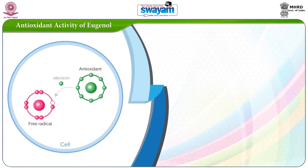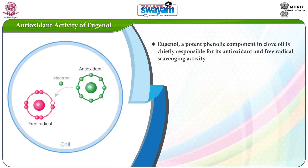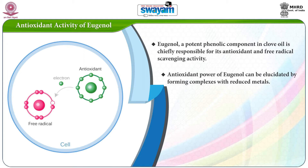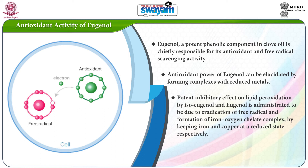The first pharmacological property is the antioxidant activity of eugenol. Eugenol, a potent phenolic component in clove oil, is chiefly responsible for its antioxidant and free radical scavenging activity. The antioxidant power of eugenol can be elucidated by forming complexes with reduced metals. The potent inhibitory effect on lipid peroxidation by isoeugenol and eugenol is attributed to eradication of free radicals and formation of iron-oxygen chelate complexes by keeping iron and copper in a reduced state, respectively.